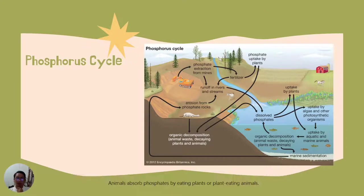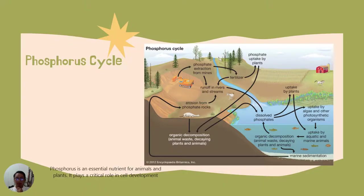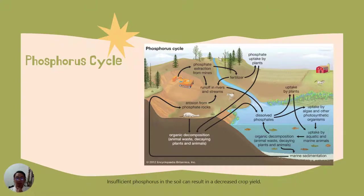Animals absorb phosphates by eating plants or plant-eating animals. Phosphorus is an essential nutrient for animals and plants. It plays a critical role in cell development and is a key component of molecules that store energy such as ATP (adenosine triphosphate), DNA, and lipids — fats and oils. Insufficient phosphorus in the soil can result in a decreased crop yield.